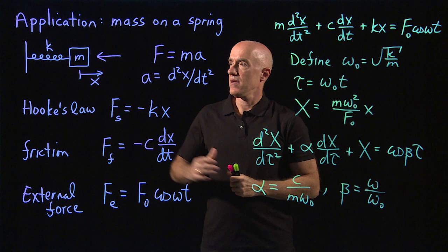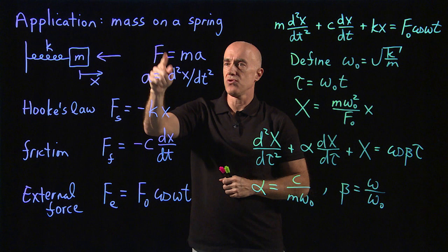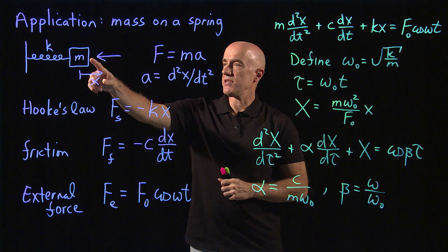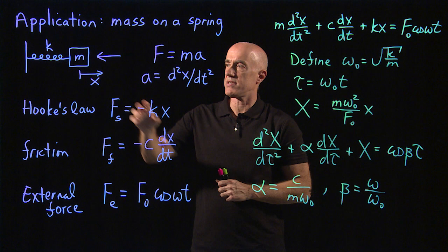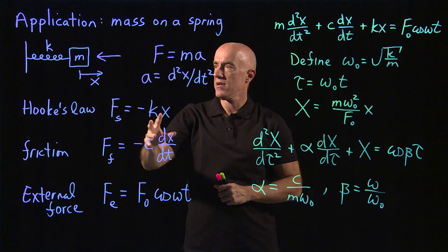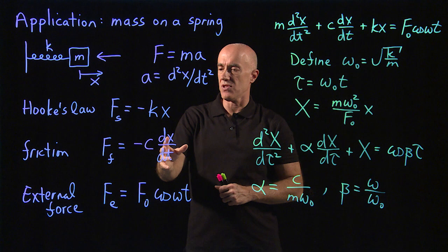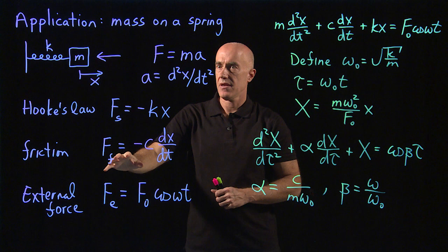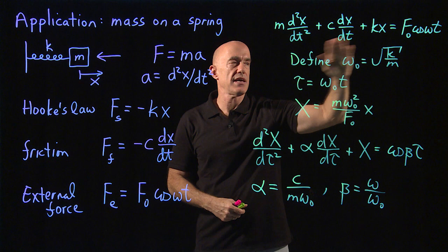So let me review what I did. We have the application of a mass on a spring. We're using Newton's law, f equals ma. The acceleration is the second derivative of x with respect to time. We need to figure out how we're gonna model the forces on this mass. We're gonna model the spring force using Hooke's law. We're gonna model the frictional force by saying it opposes the velocity and is proportional to the velocity. And then we're gonna model an external force, so someone is driving this mass. F equals ma gives us a second order differential equation.